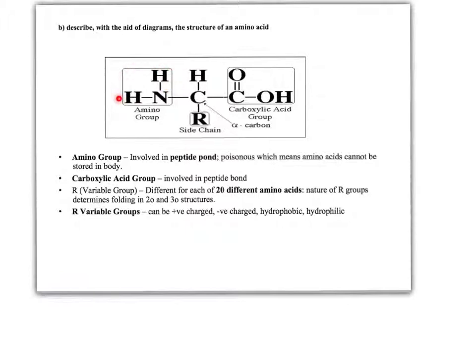The amino groups react with the carboxylic acid groups of other amino acids to form peptide bonds, which we'll come back to. The fourth group is R, which is a side chain or variable group. This is the bit that makes a particular amino acid what it is.